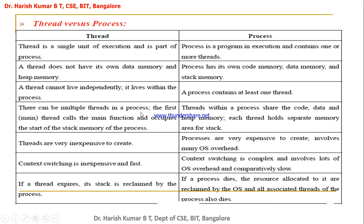A process can live independently because every process has its own address space. There can be multiple threads in a process — the first main thread calls the main function and occupies part of the stack memory. Threads within the process share code, data, and heap memory, but each thread gets its own separate stack memory. Threads are inexpensive to create since they share the same address space. Processes are expensive because a separate address space is created each time. Thread context switching is also inexpensive and fast because the address space doesn't need to change.